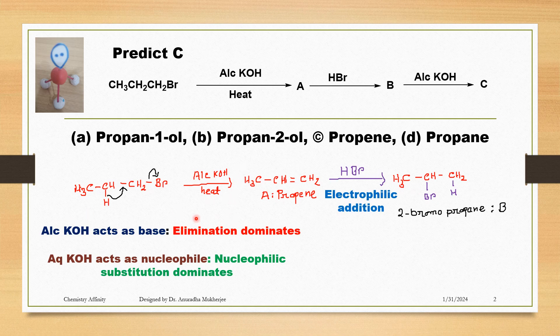When propyl bromide is treated with alcoholic KOH followed by heating, exclusively elimination reaction happens and here we are getting propene. Compound A is propene.